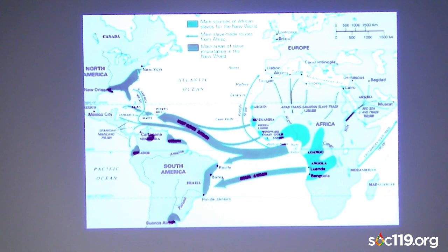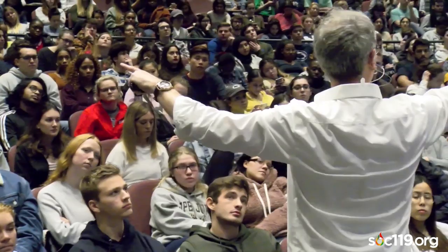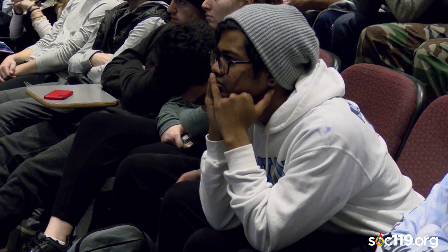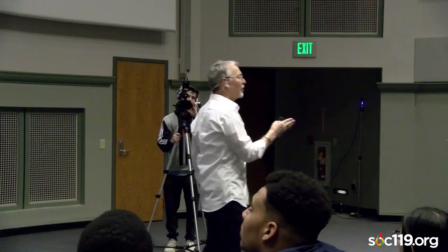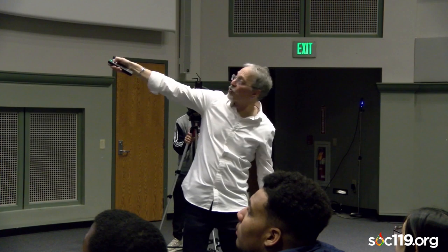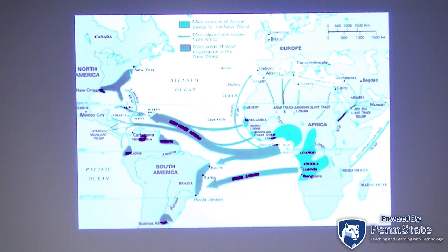Those of you who identify as African-American — technically you're not African-American, you're West Central African-American. Your genetic admixture, who you are, what you look like — if I brought ten students from Africa up to the front and you lined up, you'd see very distinct features of the African students. Africans that came to South America, the Caribbean, and North America all come from particular, relatively small and isolated regions of Africa.